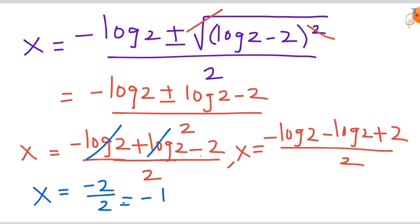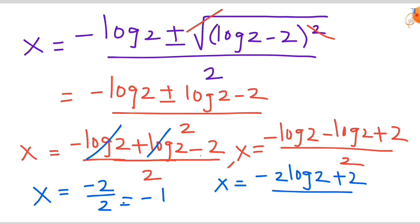For the plus case: −log 2 + log 2 cancel, leaving −2 / 2 = −1. For the minus case: −2·log 2 + 2 divided by 2, which simplifies to 1 minus log 2. These are our two x values.